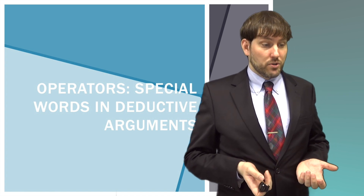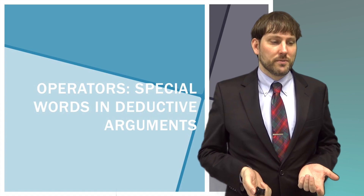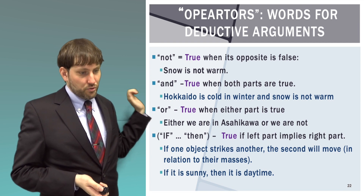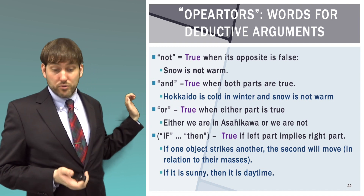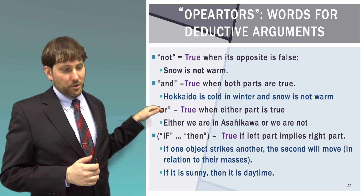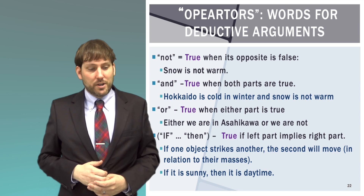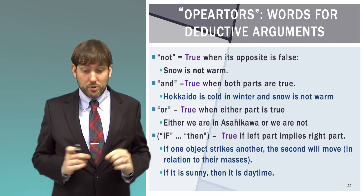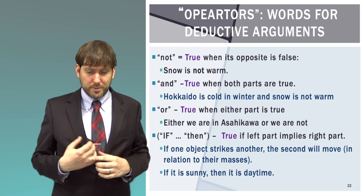Operators are words that have special meaning in deductive arguments and are the ways that arguments move forward. 'Not' is true when its opposite is false — for example, 'snow is not warm.' 'And' is true when both parts are true — 'Hokkaido is cold in winter and snow is not warm.' 'Or' is true when either part is true — 'either we are in Asahikawa or we are not.' 'If-then' is true if the left part implies the right part — 'if it is sunny, then it is daytime.' I will explain all of these in much more detail later.